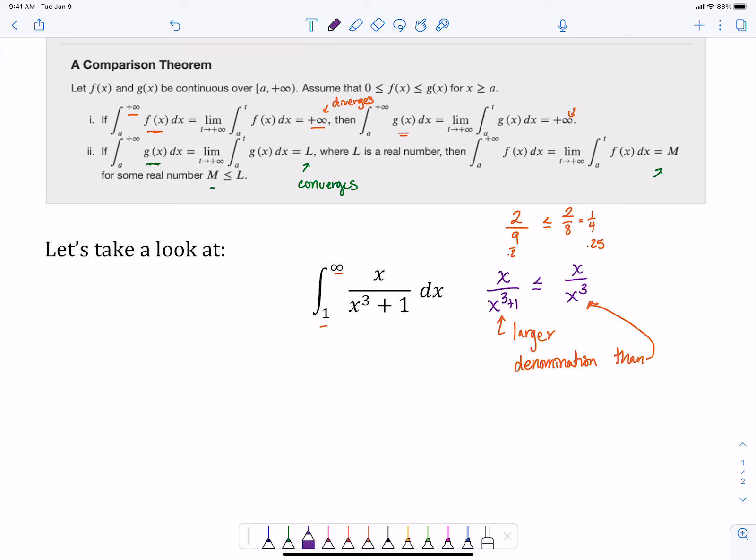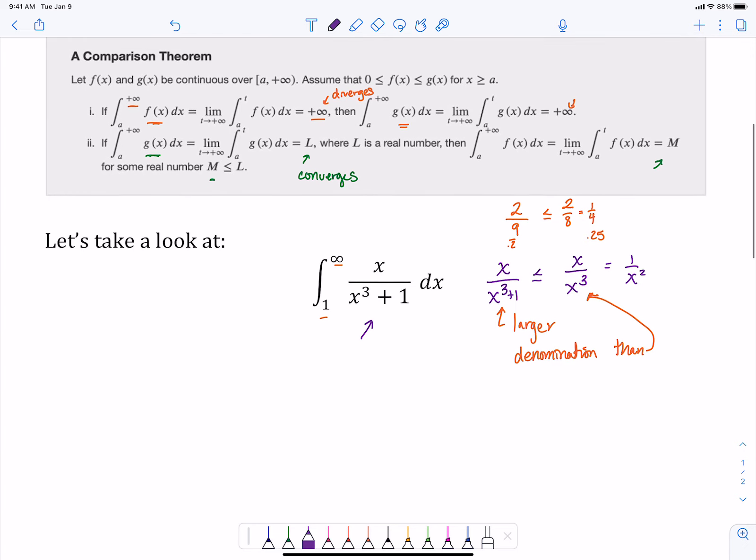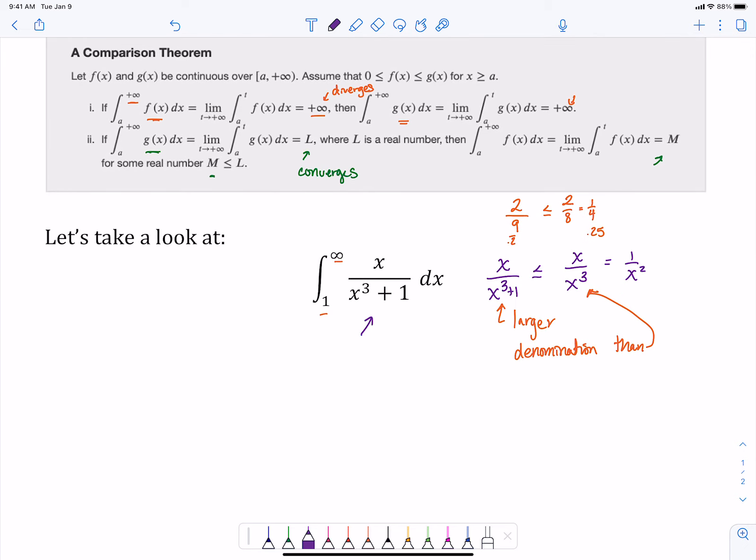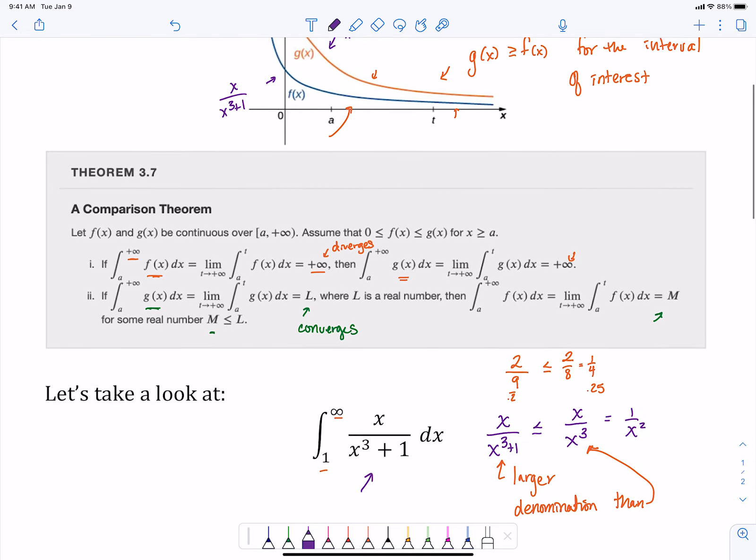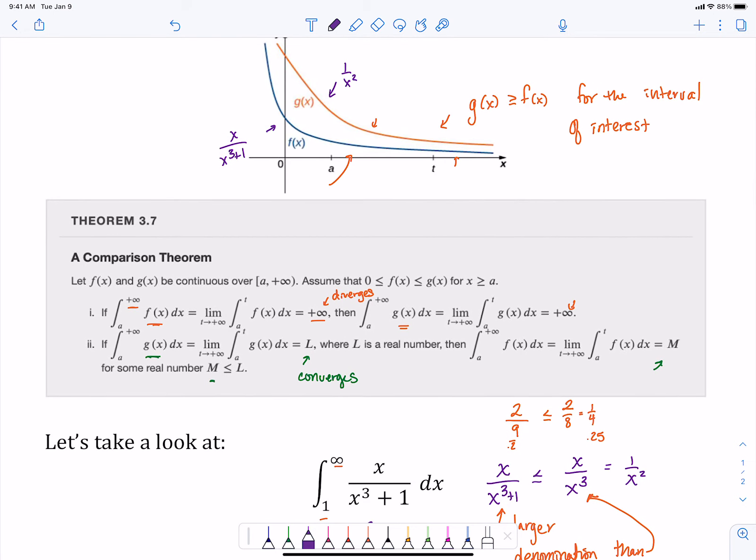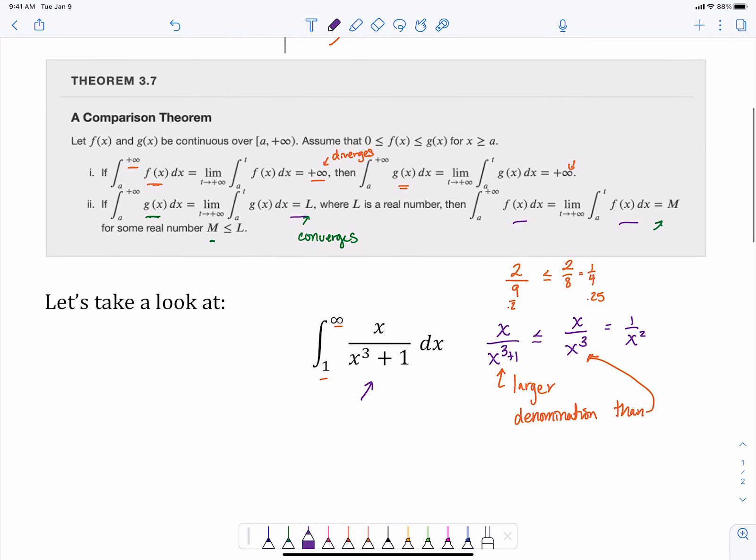So what we can do is we can compare this function with x over x cubed, or 1 over x squared, and compare the integrals. So we've got one that sits up above it, that our 1 over x squared would be our g(x), and then our x over x cubed plus 1 would be our f(x). And what we're hoping to show is that our upper function converges because then we would note that our lower function also converges.